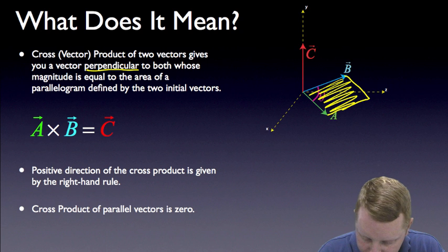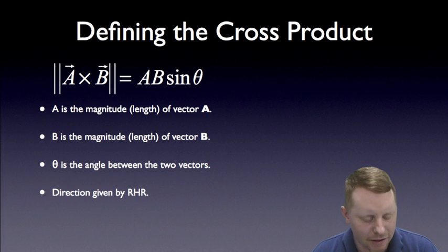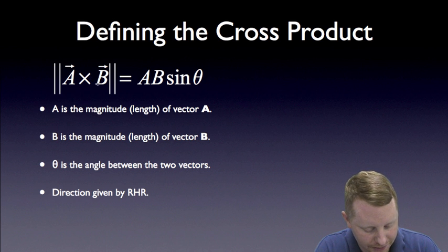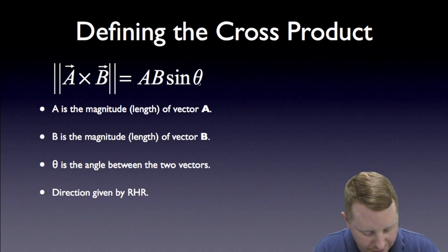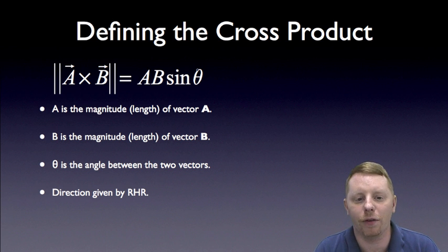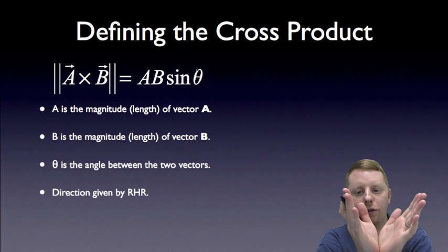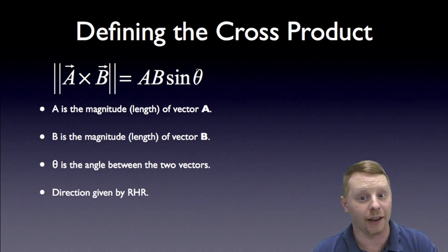To find the magnitude of the cross product, the magnitude of a cross b is given by the magnitude of a times the magnitude of b times the sine of the angle between them, where the angle between them is the smaller of the angles. If you have two vectors, you could go one direction from one to the other, or you could go the long way around — pick the smaller angle.